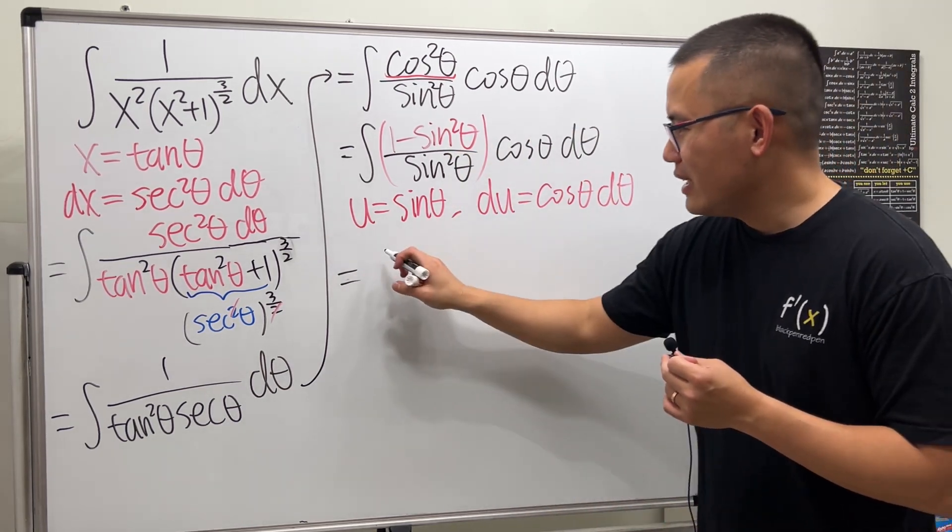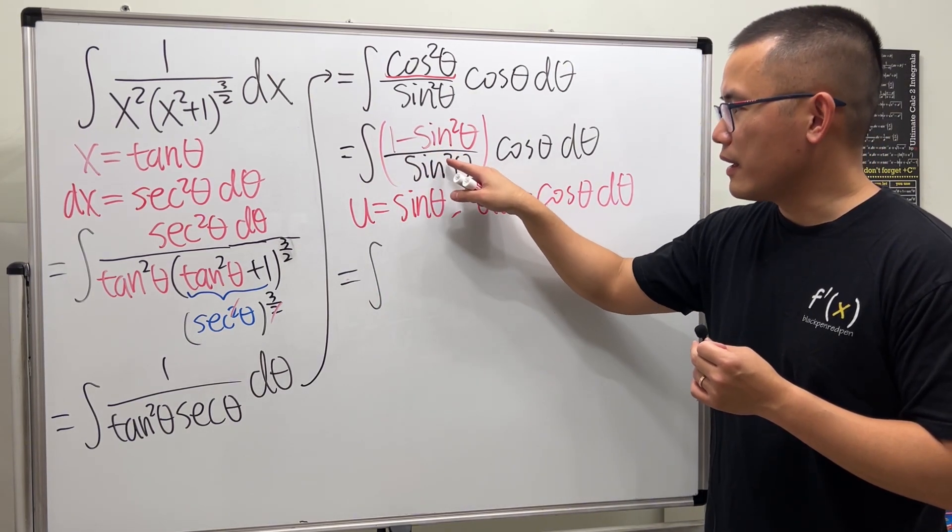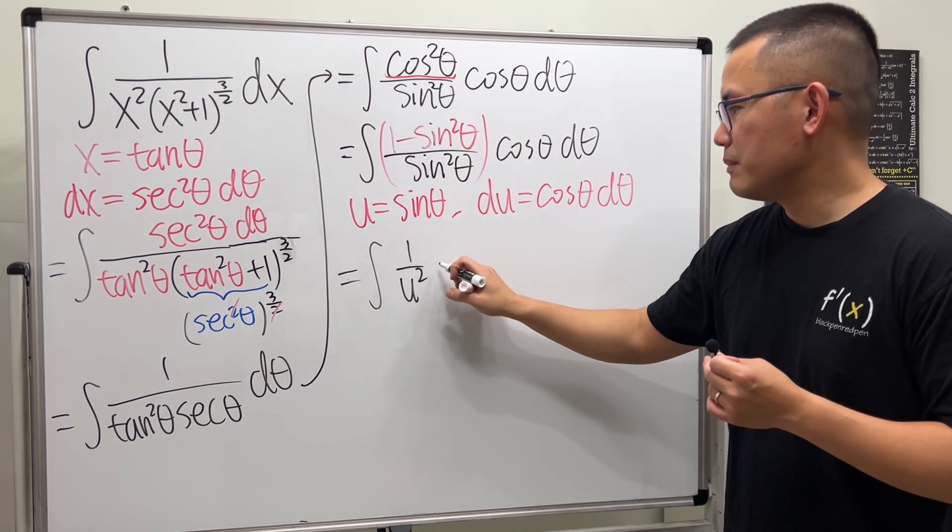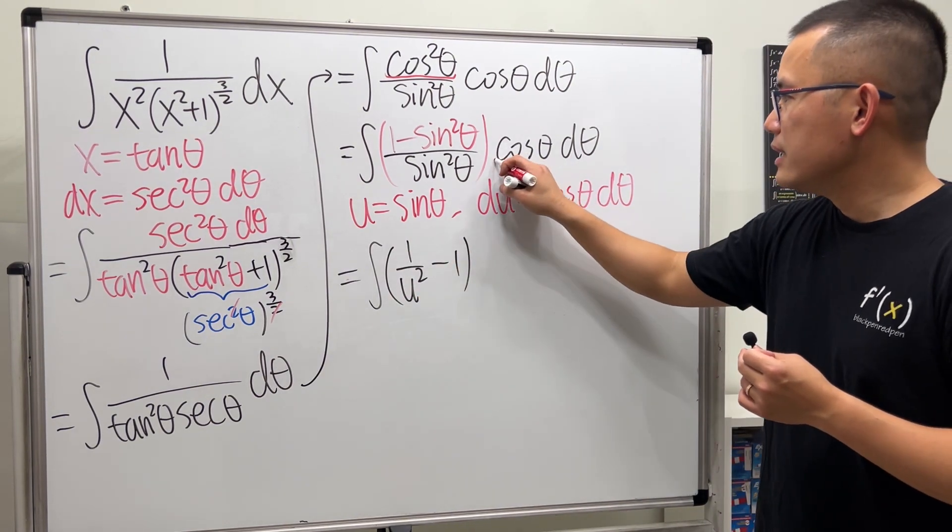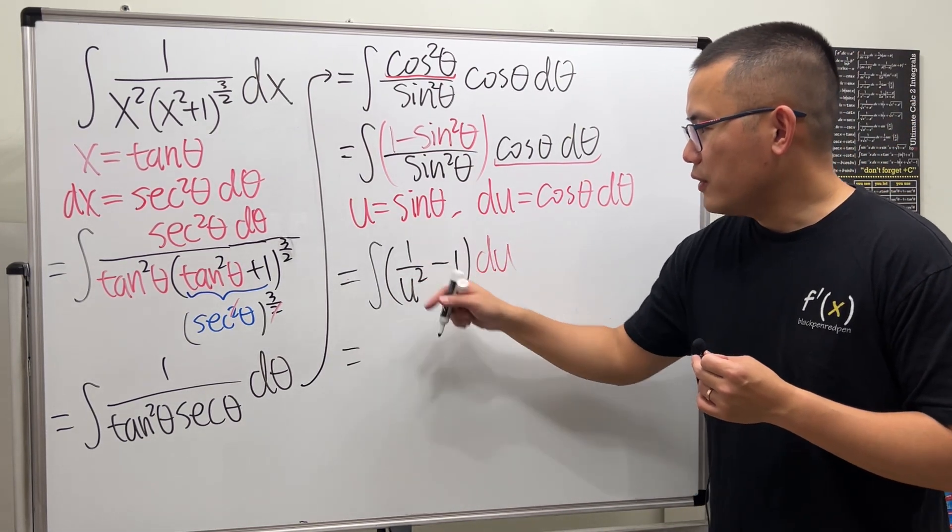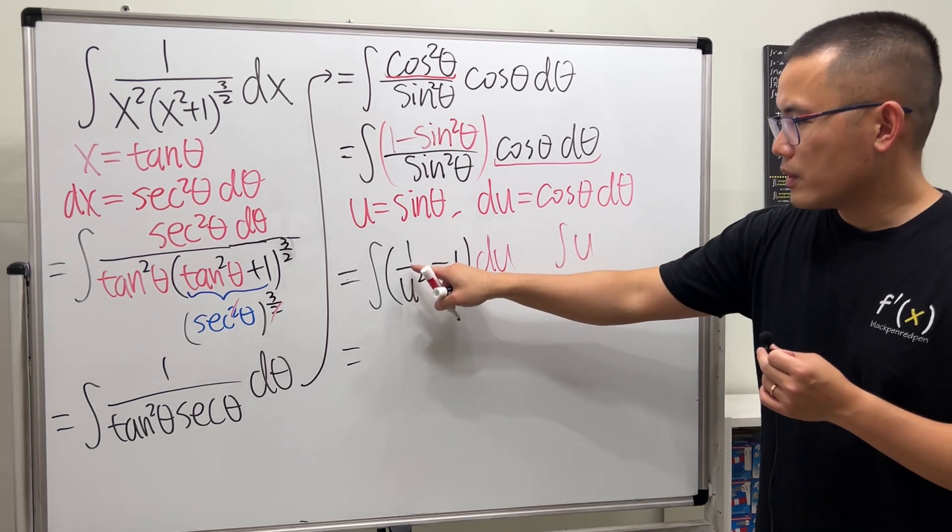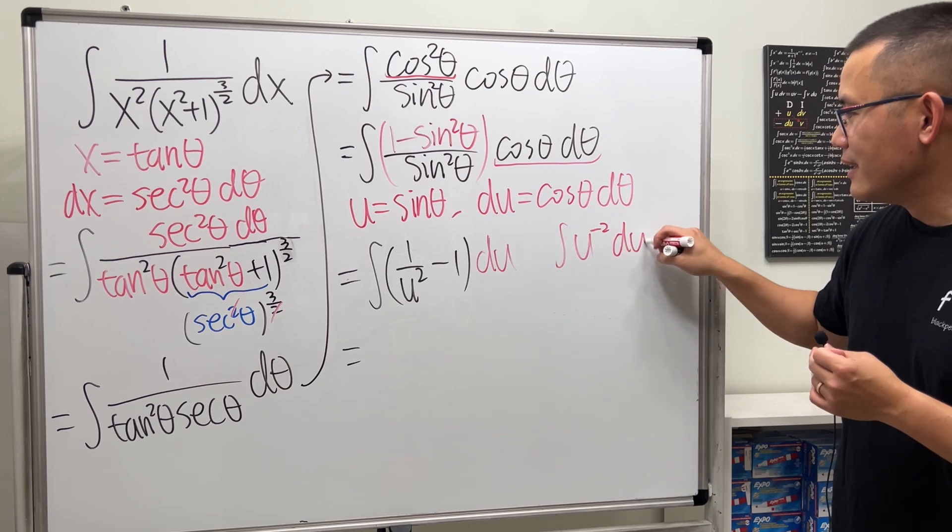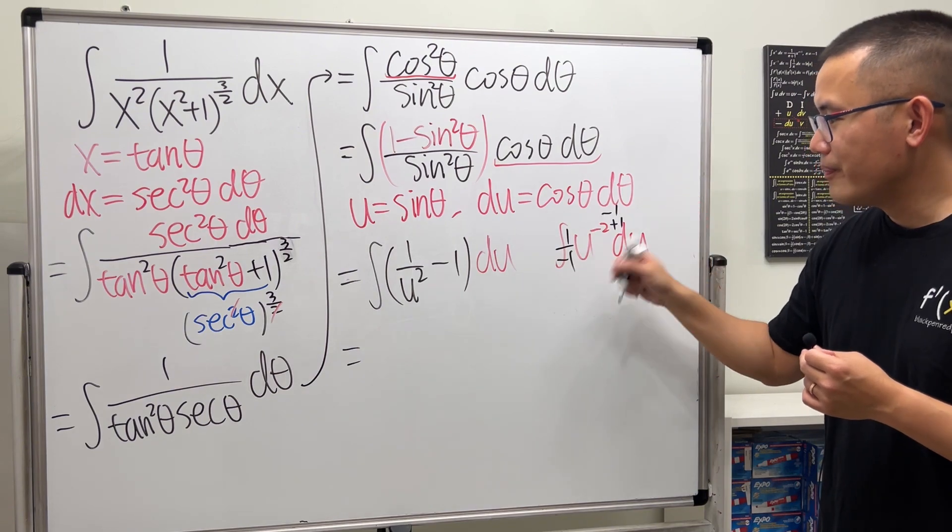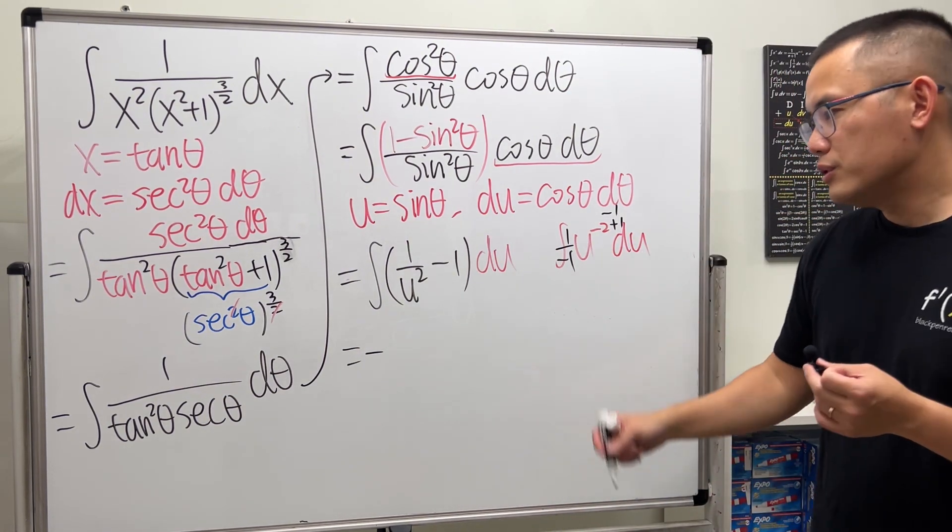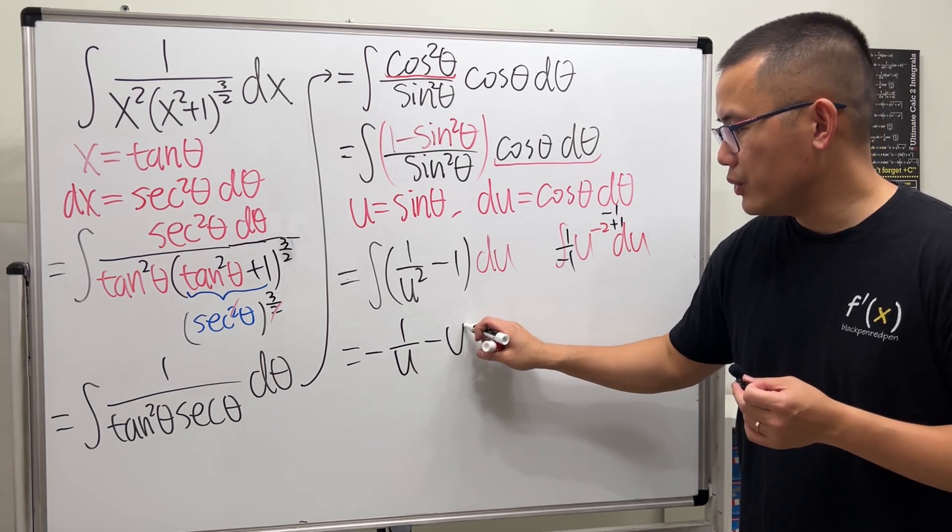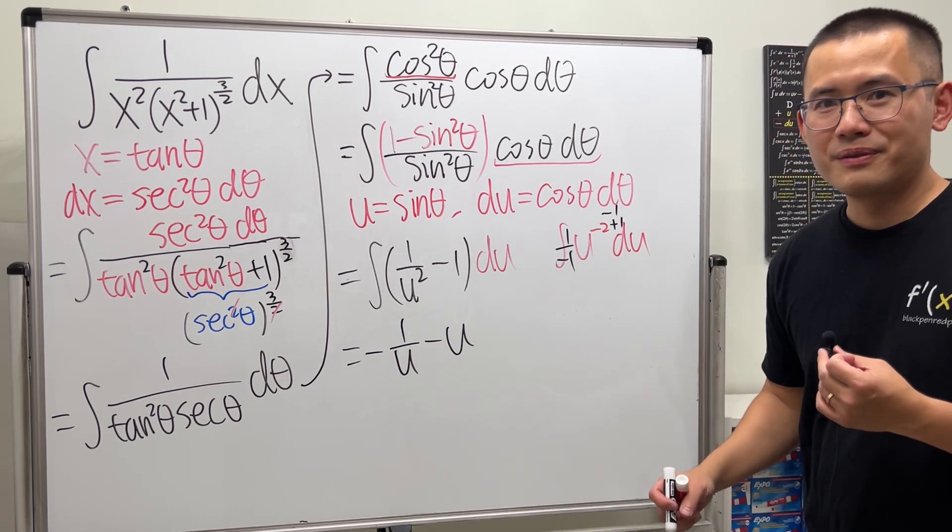Now we take this integral to the u-world. We have 1 over u squared minus 1, which equals du. When we integrate u squared on the bottom, that's u to the negative 2, so we add 1 to get negative 1 for the power, then divide by the new power. We get negative u to the negative 1, which is -1/u. Integrating minus 1 in the u-world, we get minus u.